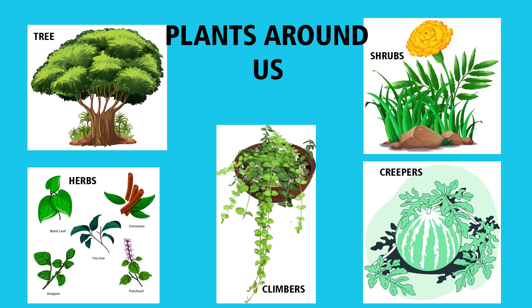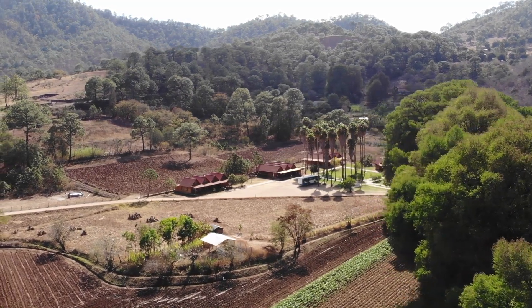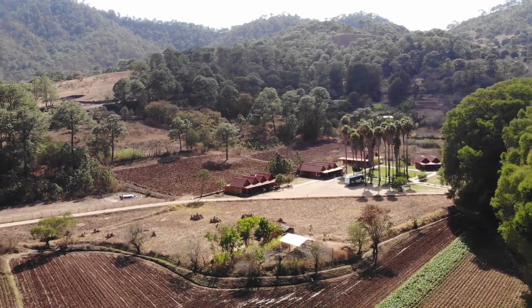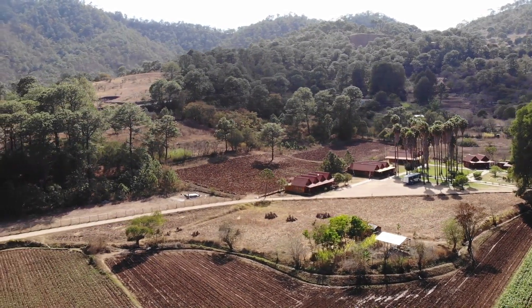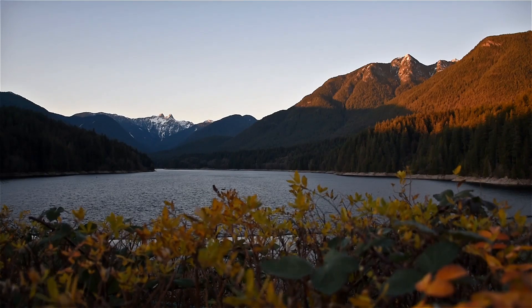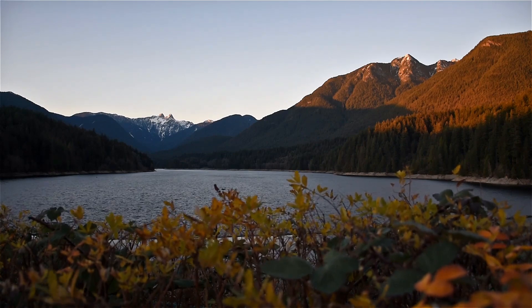Children, plants are grouped as trees, shrubs, herbs, climbers and creepers, depending on their size and how strong their stem is. Plants are very necessary for us. They provide us oxygen to breathe and food, clothes, medicine, paper, etc. So, come on, let's learn types of plants.